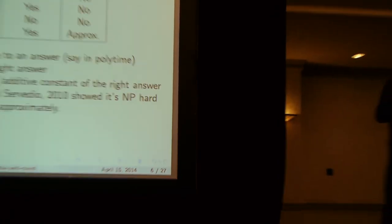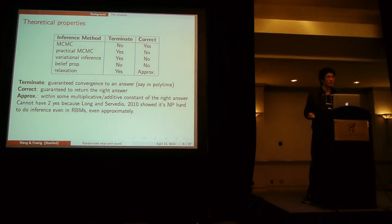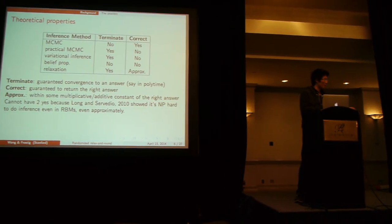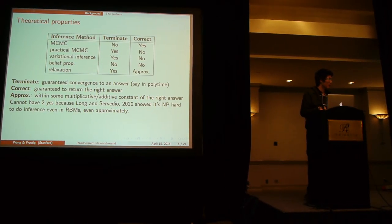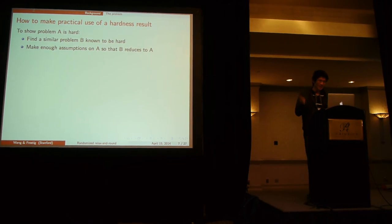So some theory tells us that you cannot have two Es in any of the rows, because even inferencing a fairly restricted model of RBM is NP-hard, even approximately. So while you look at this hardness result you can wonder if you can make any practical use of it.